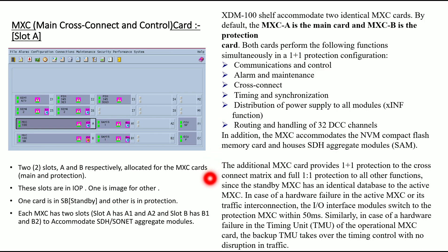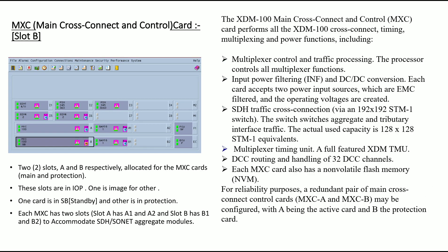The additional MXC card provides 1+1 protection to the cross-connect matrix and full 1-to-1 protection to all other functions. Since the standby MXC has an identical database to the active MXC, in case of hardware failure the input-output interface modules switch to the protection MXC within 50 milliseconds. Similarly, if there is a failure in the timing unit, the backup unit takes over with no disruption to traffic.